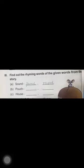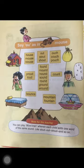Similarly, you have to think of rhyming words for the next two words: pouch and house. If you want, you can have a look at page number 28, but make sure you write only those rhyming words which you have read in the story. Now let's move on to question number four.